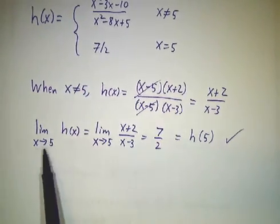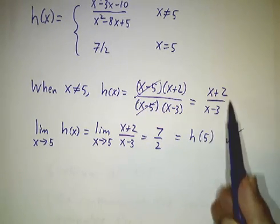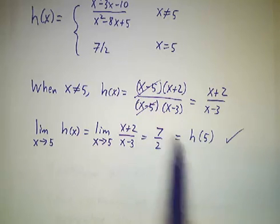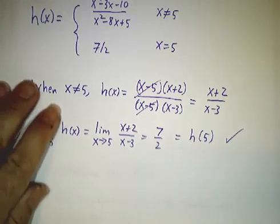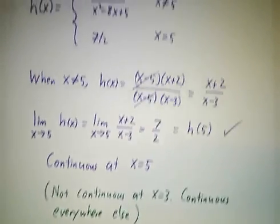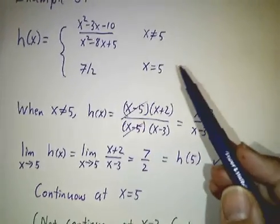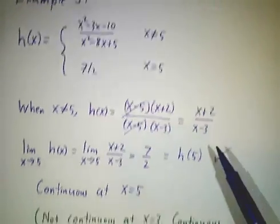The limit as x approaches 5, whether from above or below, is the limit of this expression, which is 7 halves. That's the same as the value at x equals 5. So it's perfectly continuous at x equals 5. It's still not continuous at x equals 3, because at x equals 3, this expression blows up. It's not defined at x equals 3, but it's continuous everywhere except at x equals 3.